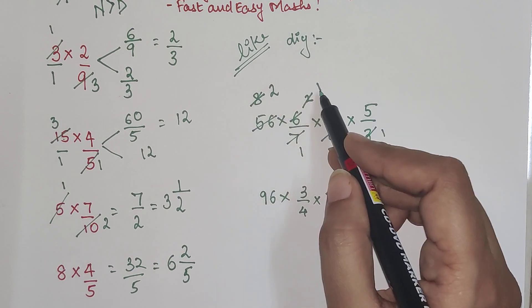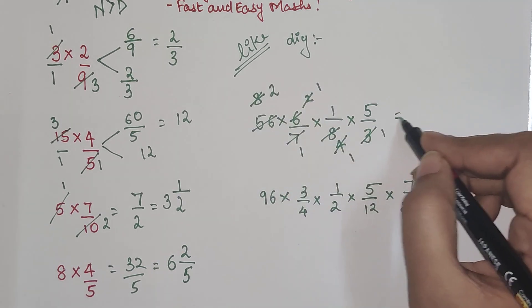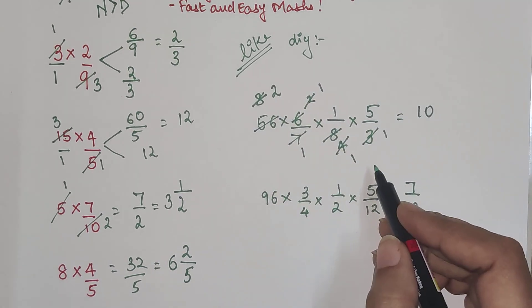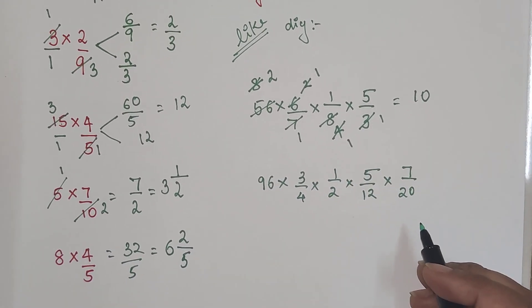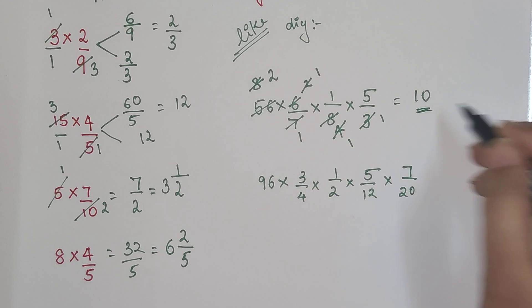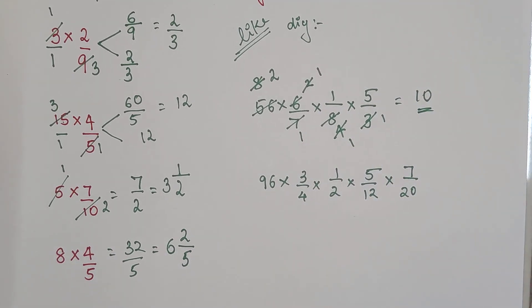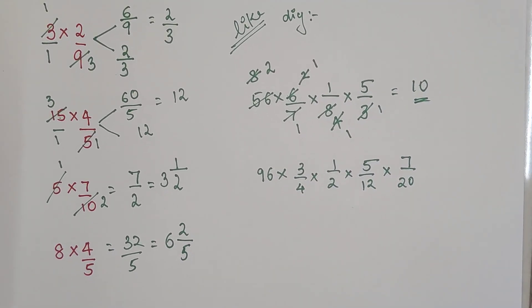So now we are just left with 2 into 1 into 5. That is nothing but 10. And in the denominator everything is coming out to be 1. So your final answer for this particular multiplication will be just 10.